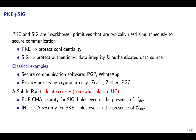PKE and Signature are workhorse primitives that are typically used simultaneously to secure communication. Public key encryption protects confidentiality, while Signature protects authenticity. Examples include secure communication software such as PGP and WhatsApp, and privacy-preserving cryptocurrencies such as Zcash, Zezer, and PGC.